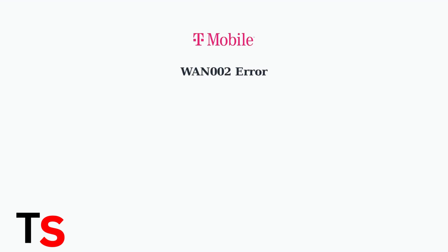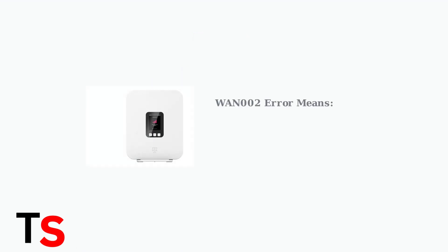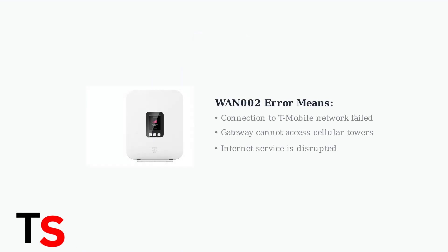The WAN002 error on your T-Mobile gateway indicates a problem with the device's connection to the T-Mobile network. This error can prevent your internet from working properly. When you see WAN002 on your gateway, it means the device cannot establish or maintain a connection to T-Mobile's cellular network, blocking your internet access completely.